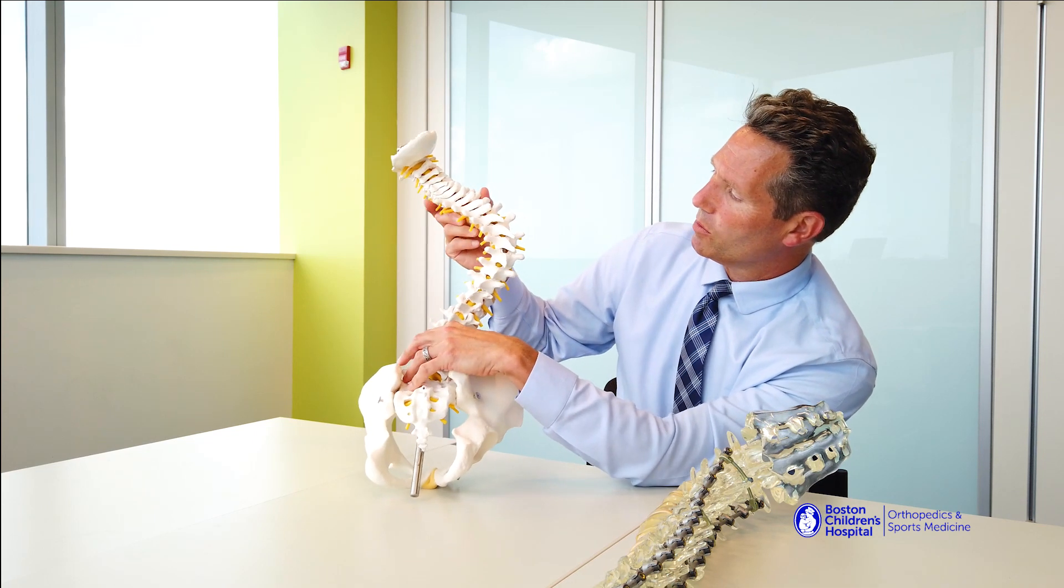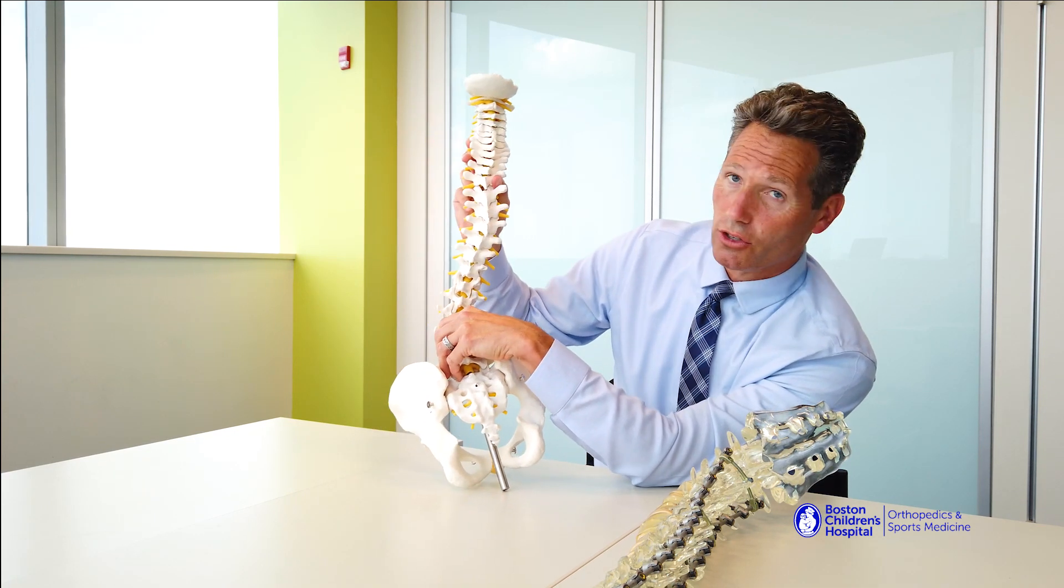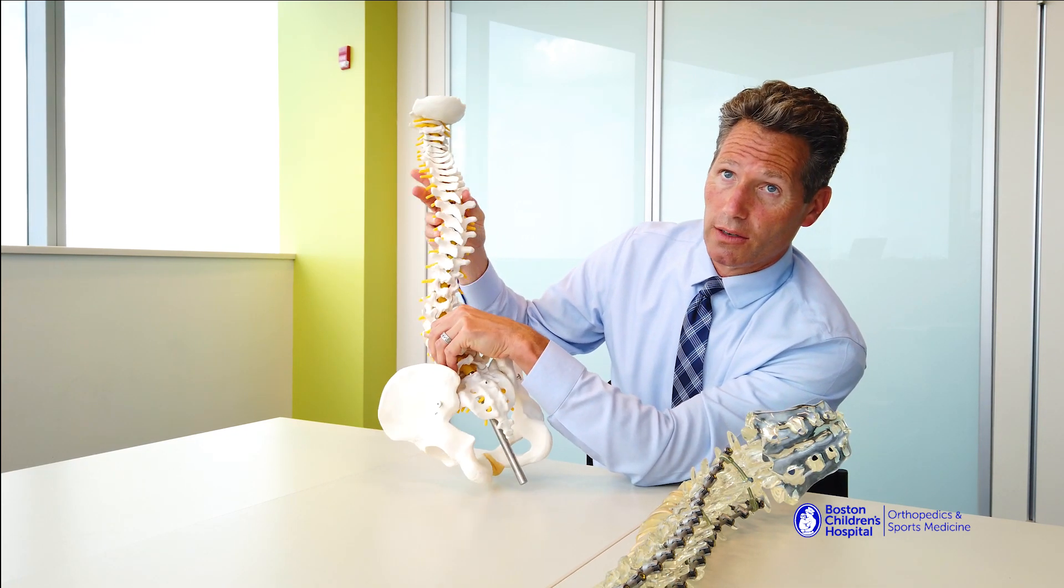If your spine is curved on this model, the goal is for us to make it straight and once it's straight we also need to hold it still until the bones grow together. So that's why we use spinal instrumentation.